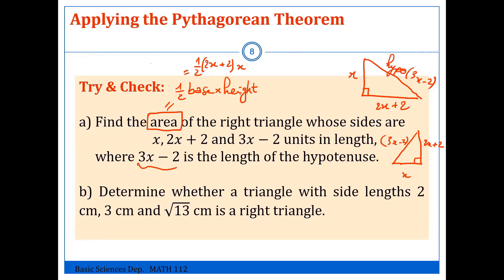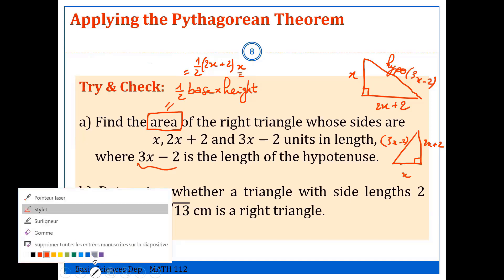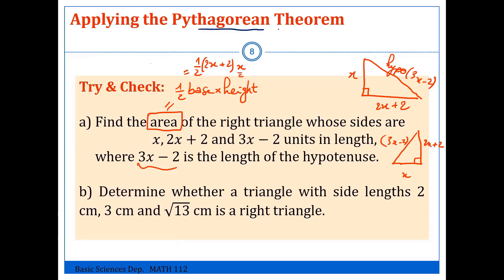So as in the last example, we first have to calculate the value of the unknown x. And this can be done using Pythagoras. So we call Pythagoras, and the sum of two squares equals the square of the hypotenuse. So the hypotenuse is 3x minus 2, and the two sides are x and 2x plus 2.